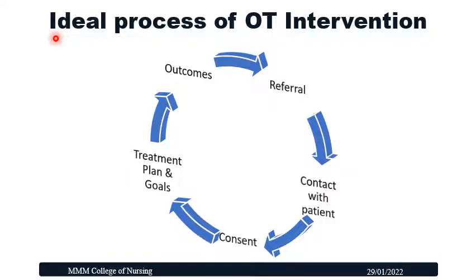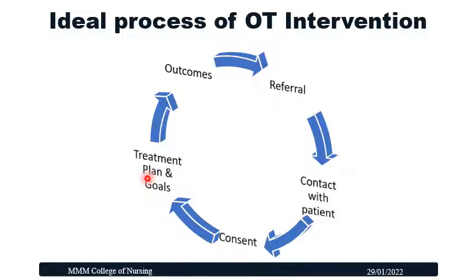The process of occupational therapy intervention begins with the nurse making contact with the patient and establishing rapport. Listening skills are very important — both verbal and non-verbal responses must be noted. The patient has to be informed about the need for occupational therapy and consent obtained. Once done, the treatment process starts as planned and goals are established and achieved.